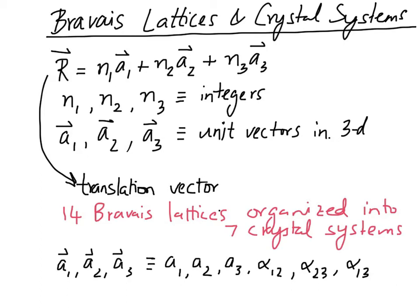Now, those three vectors can actually be traded off for six scalar quantities. The first three are the magnitudes of the three vectors — A1, A2, A3 — written without vector arrows. And the three angles alpha_12, alpha_23, and alpha_13, which are essentially the angles between any two unit vectors. So the bottom line is that the three vectors A1, A2, A3 can be traded for six numbers: the three magnitudes A1, A2, A3, and the three angles alpha_12, alpha_23, alpha_13.